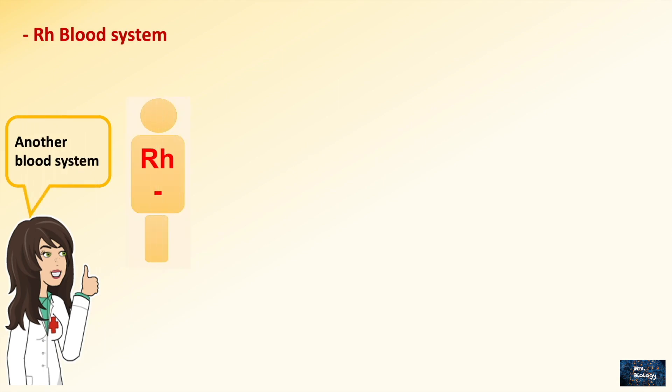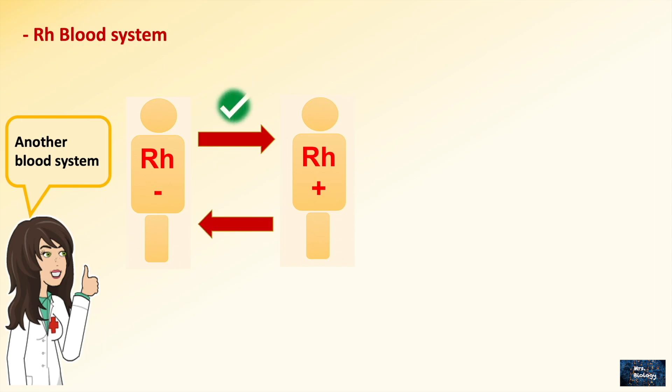Talking about the other blood system — Rh — Rh negative can donate to Rh positive, but Rh positive cannot donate to Rh negative, for the same reason, which is building antibodies.